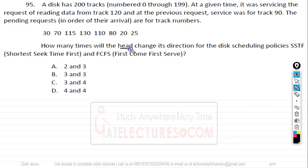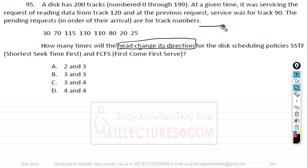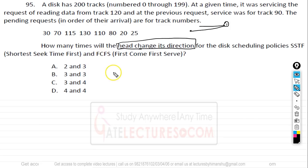The question asks how many times the head will change its direction — not about head movements overall. Head changes direction whenever it was moving in one direction and then has to reverse to service a request on the other side. We need to find direction changes for disk scheduling policies SSTF and FCFS. We have track numbers from 0 to 199.